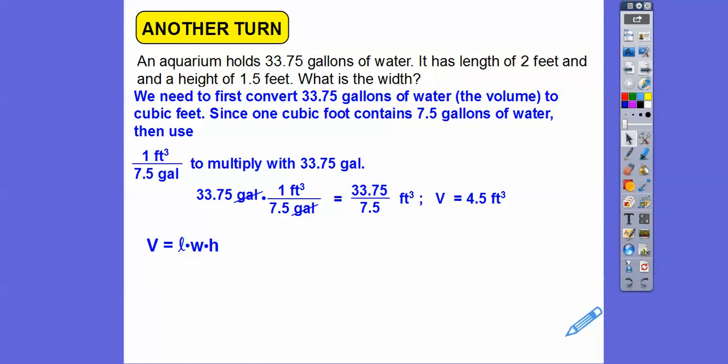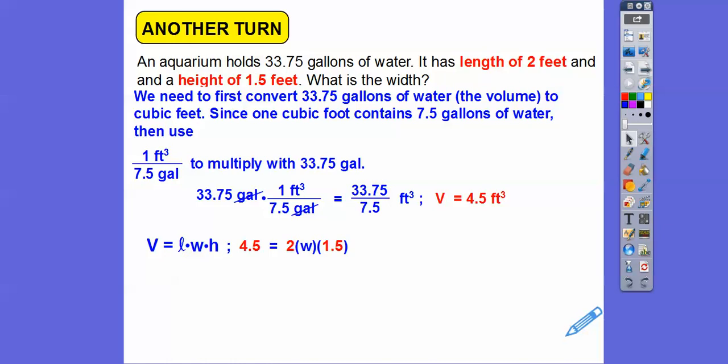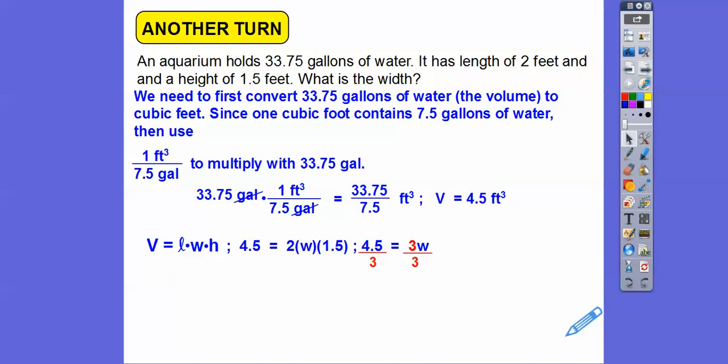And then 33.75 divided by 7.5 is 4.5, so the volume is 4.5 cubic feet. Now we just plug that into the formula: 4.5 equals 2 times the width times 1.5, so all the information goes in there. Divide and we get 1.5, so the width is going to be 1.5 feet.